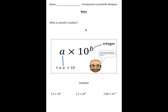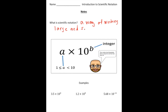So first things first, what exactly is scientific notation? Scientific notation is a way of writing really large and small numbers. And scientific notation has a certain structure to it.